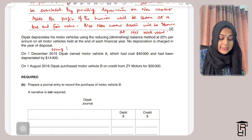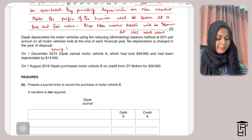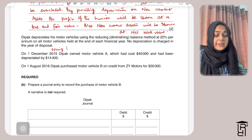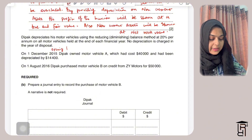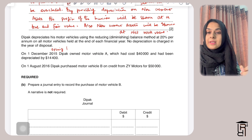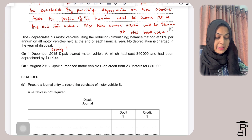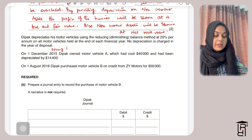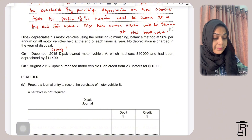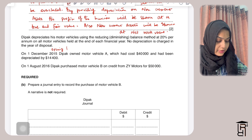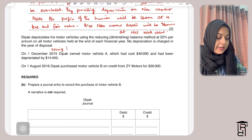On 1st August 2016, Deepak purchased motor vehicle B on credit from ZY Motors for 50,000. To record the purchase, we debit the motor vehicles account by 50,000 because the motor vehicle is coming into the business. Since we are buying on credit, we credit ZY Motors by 50,000. A narrative is not required.